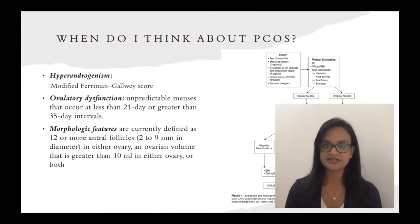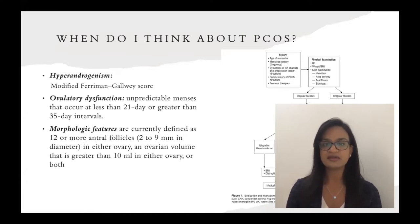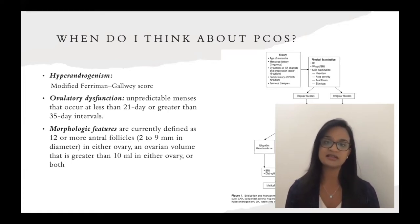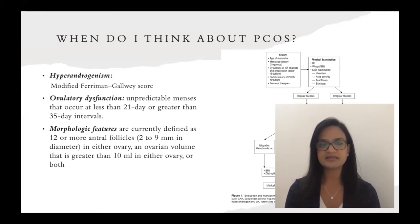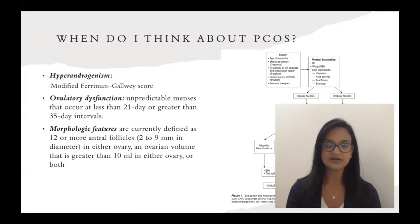Clinically, as an internist, I see patients aging from 18 onwards, with a lot of work in women's health and hormonal testing. When I think about PCOS, I go through an extensive history and physical exam before getting to the diagnosis because a lot has to be ruled out first. The three things we look for in common for PCOS: first, hyperandrogenism — we use a modified Ferriman-Gallwey score to describe physical characteristics of high androgen levels. Second, ovulatory dysfunction — unpredictable menses occurring at less than a 21-day or greater than a 35-day interval. Third, morphological features — currently defined as 12 or more antral follicles, about 2 to 9 millimeters in diameter, in either ovary, and an ovarian volume greater than 10 milliliters.